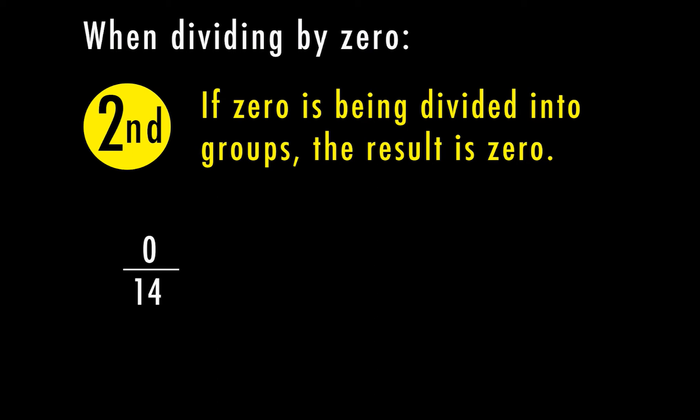So here I have zero divided by 14. Well, if I have zero candy bars and I'm splitting them over 14 people, nobody's going to get anything because I have zero that I'm sharing with everyone. So my answer is going to be zero.